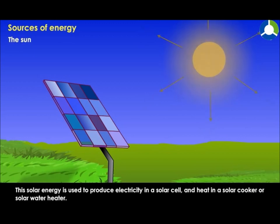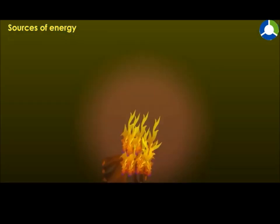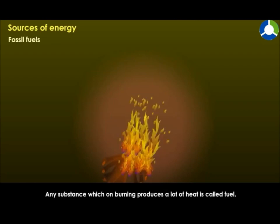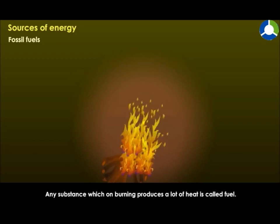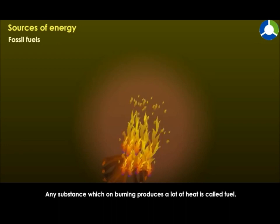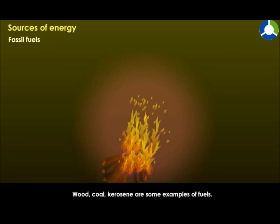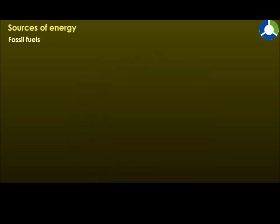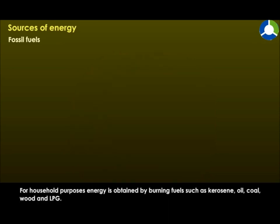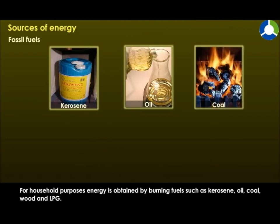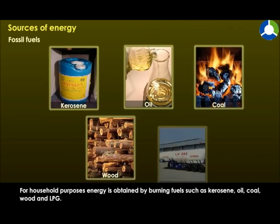Solar energy is used to produce heat in a solar cooker or solar water heater. Fossil fuels: any substance which on burning produces a lot of heat is called a fuel. Wood, coal, and kerosene are some examples of fuels. For household purposes, energy is obtained by burning fuels such as kerosene oil, coal, wood, and LPG.